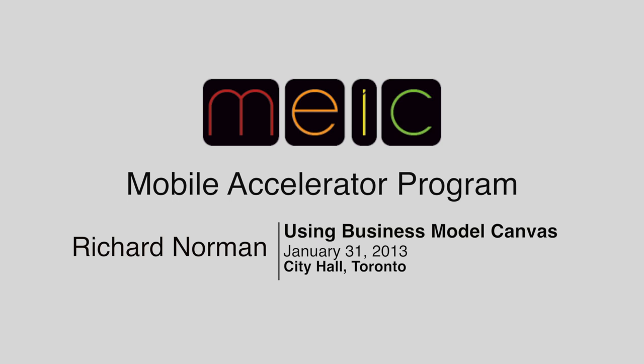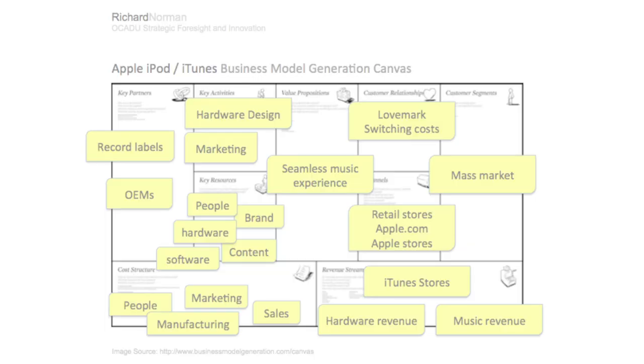I'm going to show you a real quick example of how to use this business canvas and what it's actually set up as. We're going to use a very old example — Apple. Everybody's aware of what the iPod is and how it came to market, so it can serve as an easy way of illustrating how this all fits together. The value proposition they had was this seamless music experience — it's not just about the iPod itself or music, it's really what they wanted to do is create an experience. That was the important thing rather than just a physical side product.